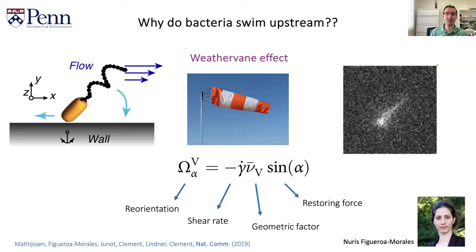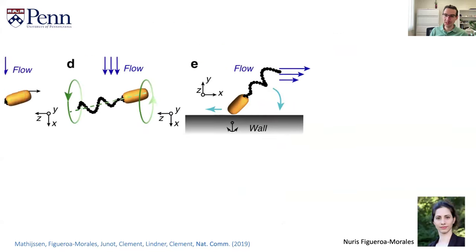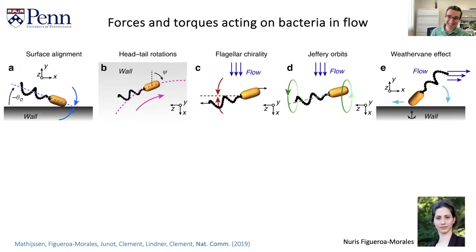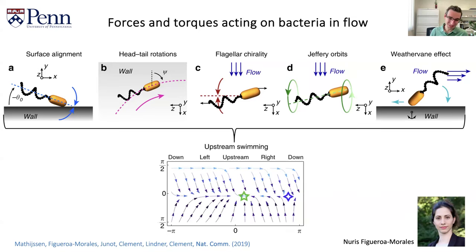The simplest functional form of this is a reorientation that looks like a restoring force: the time derivative of alpha equals minus the sine of alpha. But this is not the only term, because bacteria experience many forces and torques in flow. They have surface alignment, they swim in circles, there's a torque from that, chirality of the flagella leads to an additional torque, and they tend to do Jeffery orbits. All of these together form a dynamical system, and you can find fixed points. That fixed point corresponds to the little green arrow — an orientation in the upstream direction, described by angles theta and phi.